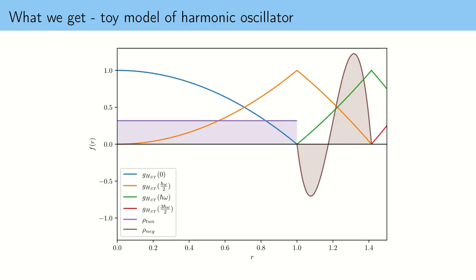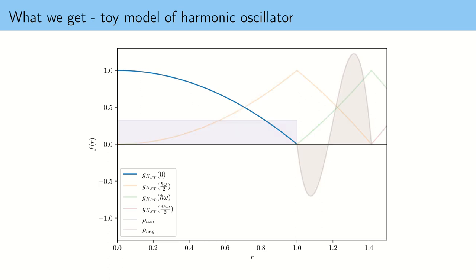So what do we get? What is the toy model that we construct? The toy model is best characterized by a figure showing several functions. The first one is the blue one, which is the operational equivalent of a projector. It is part of the phase-space spectral measure of the Hamiltonian corresponding to energy equals zero, which already shows that the ground state of our harmonic oscillator will have energy exactly equal to zero.